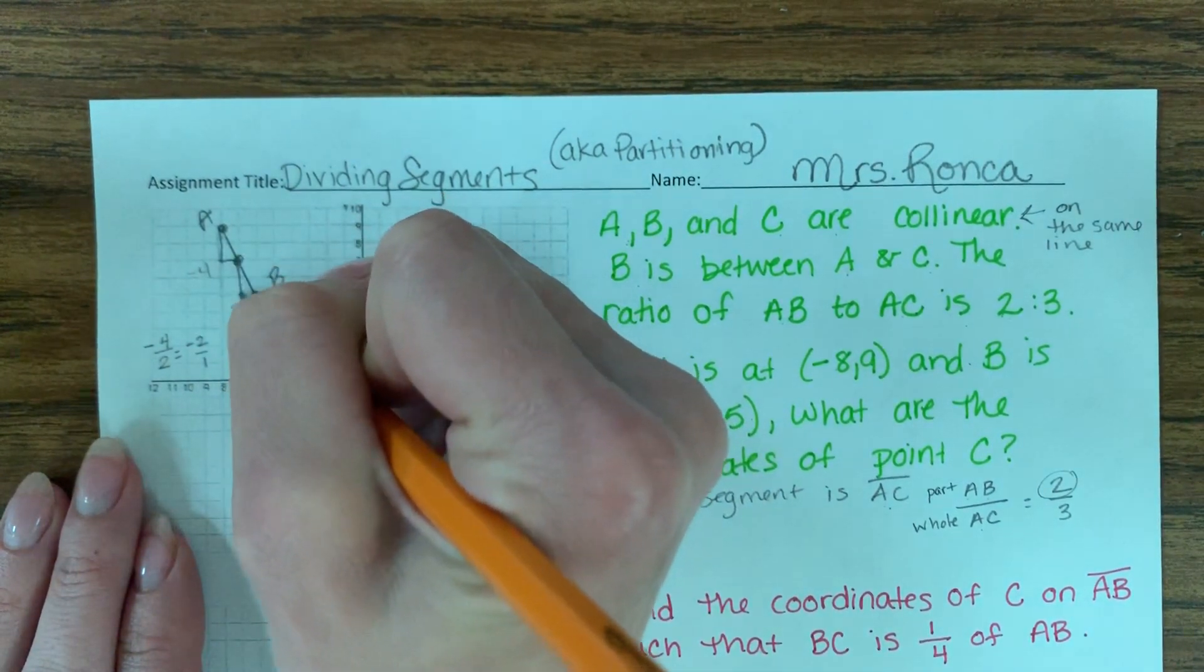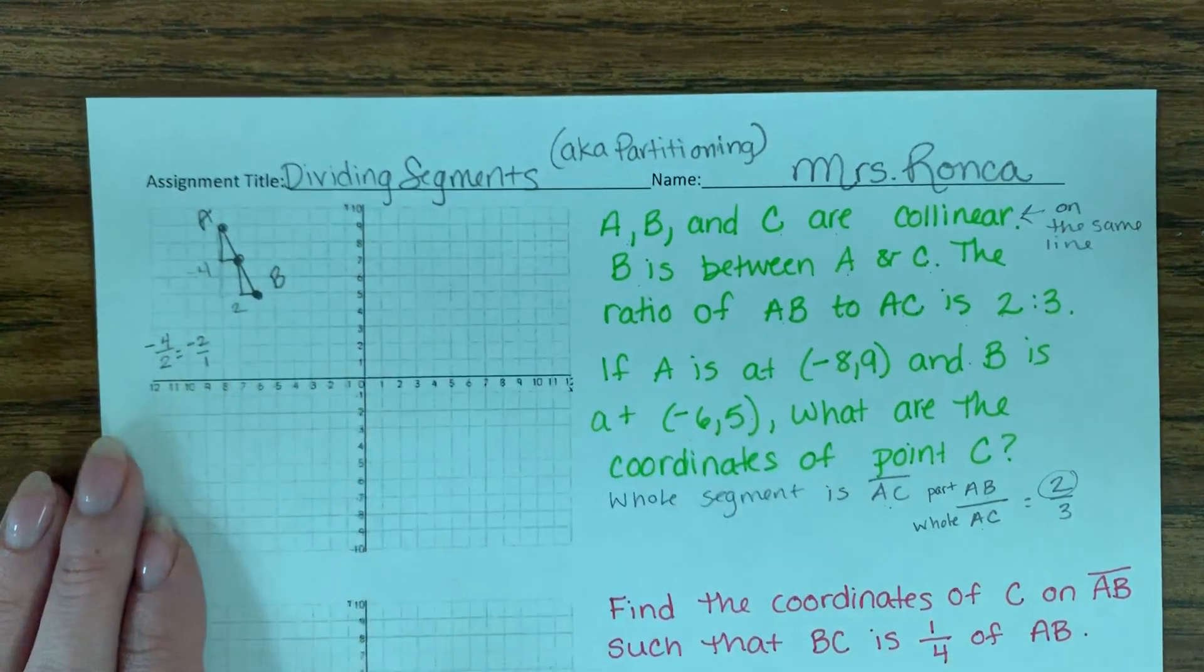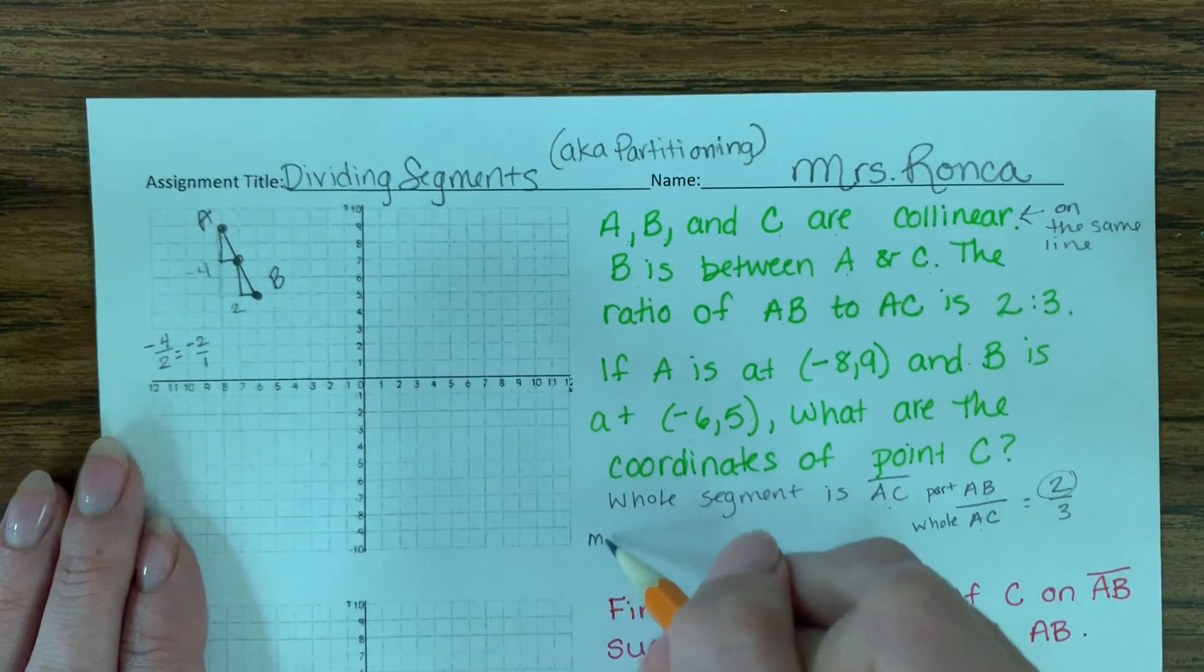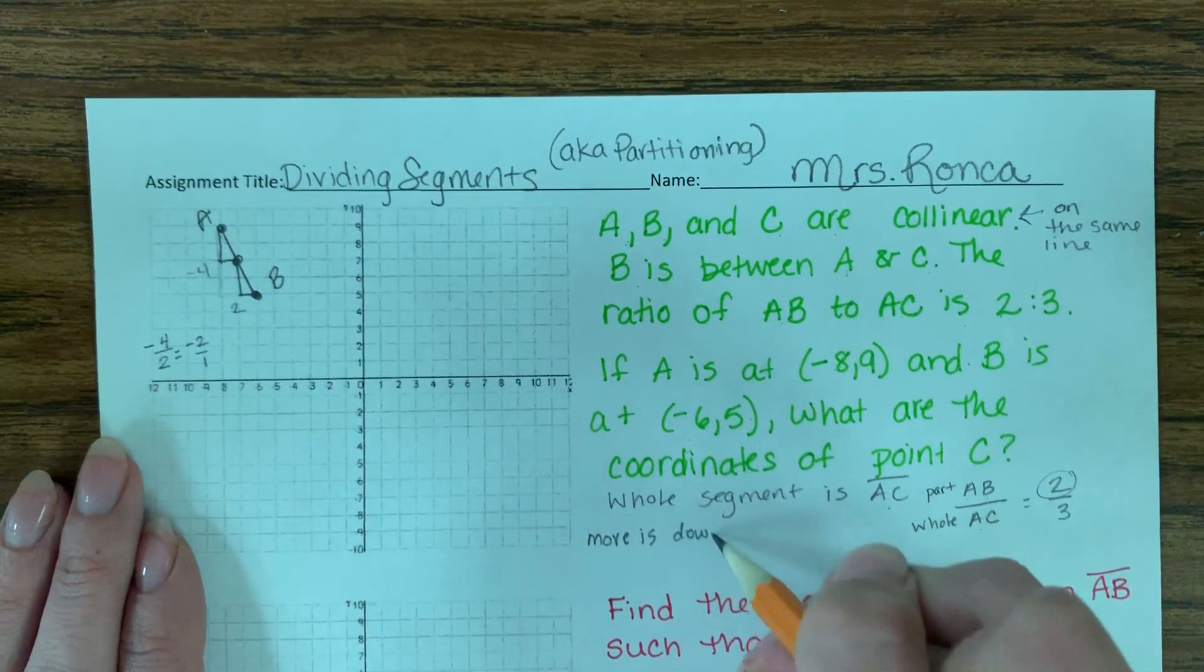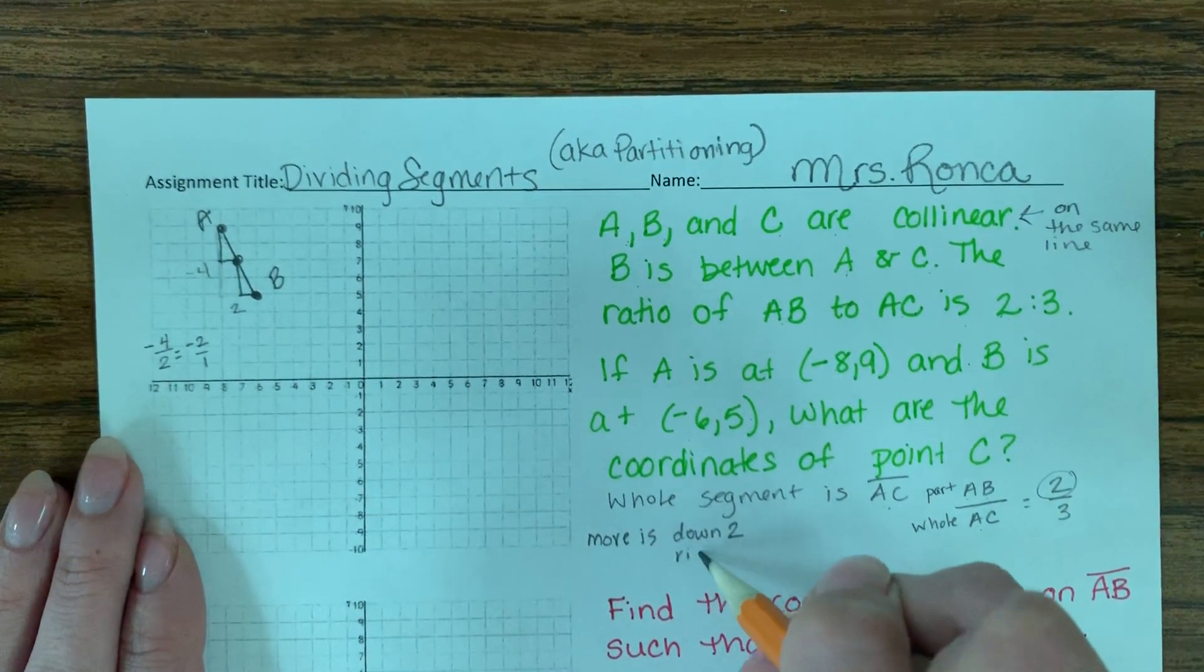my steps down 2 over 1, put a dot, down 2 over 1, put a dot. So my move that I'm doing is down 2 to the right 1.